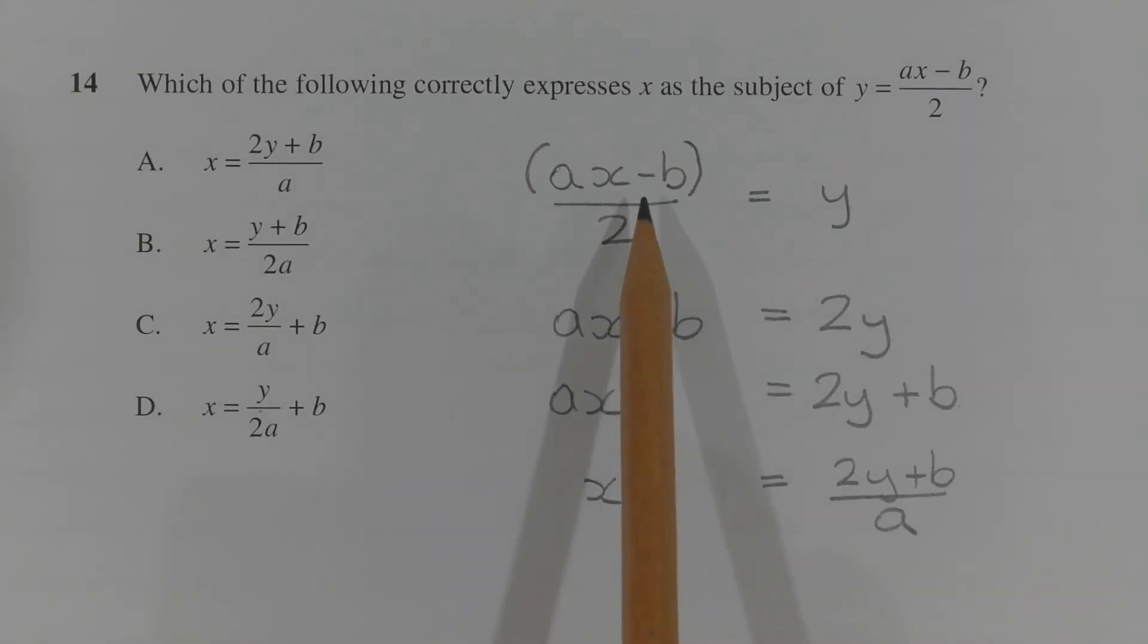So to cancel out this division by 2, I'm going to multiply both sides of the equation by 2. So we have ax minus b, and note that the brackets are no longer required, is equal to 2y.